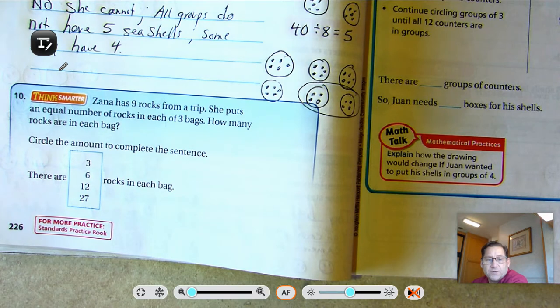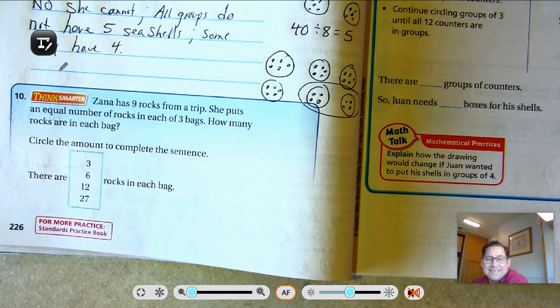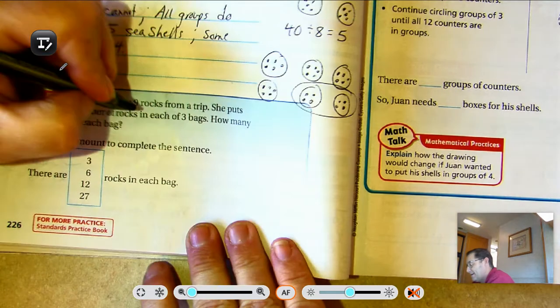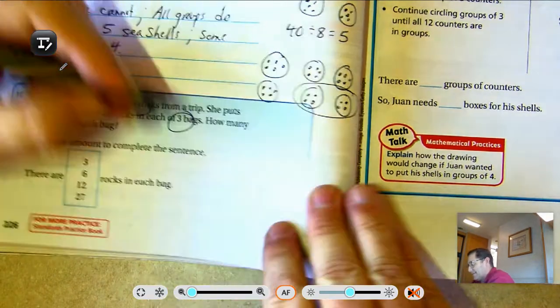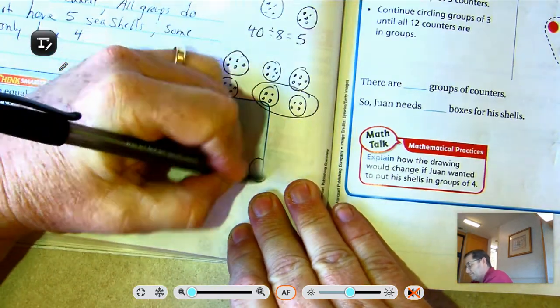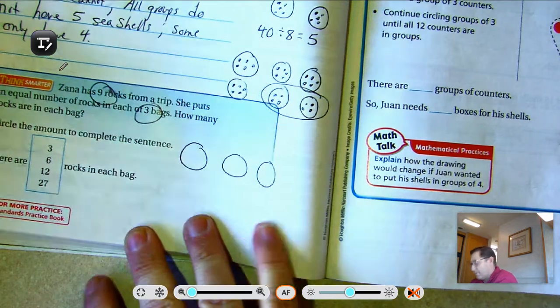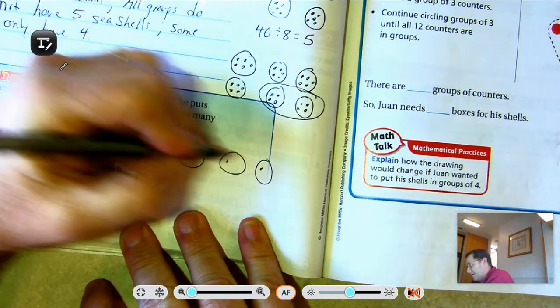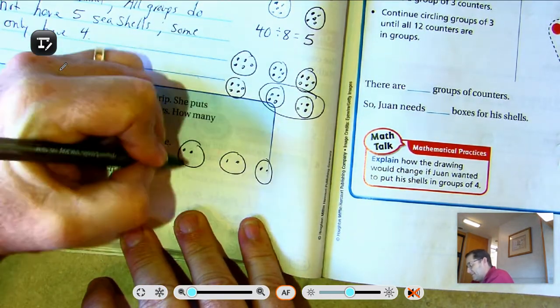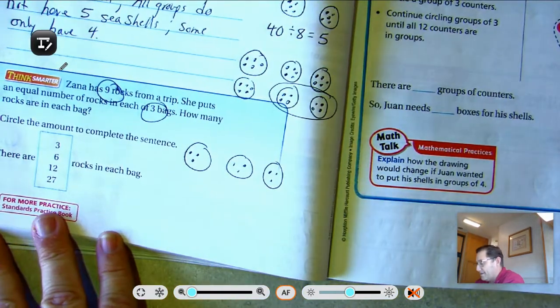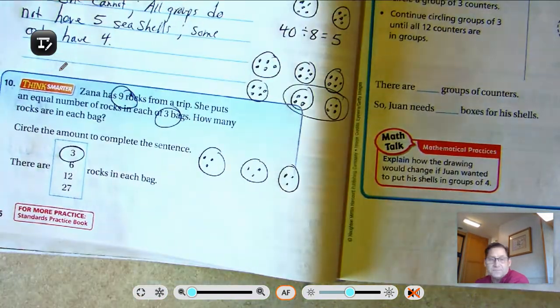All right, number 10. Zaina has 9 rocks from a trip. She puts an equal number of rocks in each of 3 bags. How many rocks are in each bag? 9 rocks, 3 bags. So share your 9 rocks into the 3 bags: 3, 6, 9. There are 3 rocks in each bag.